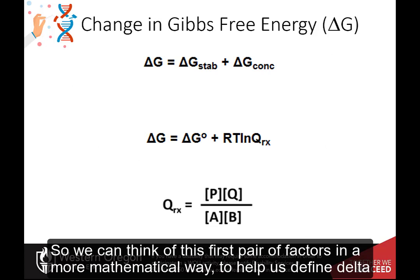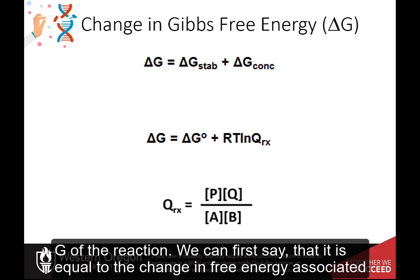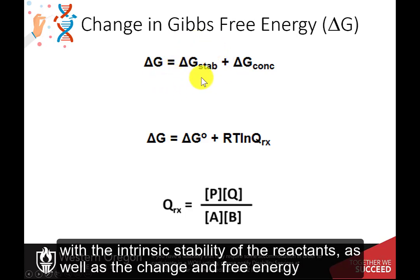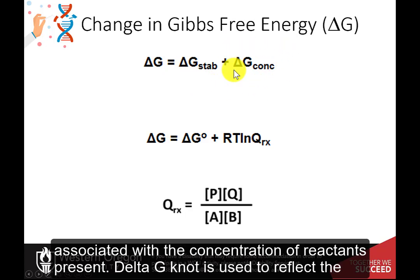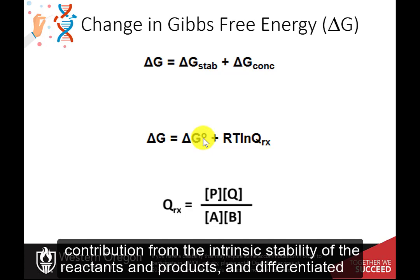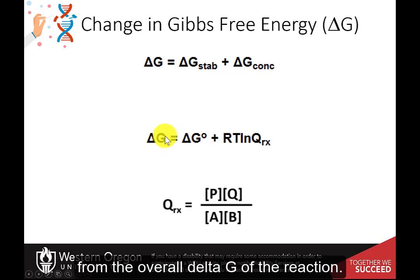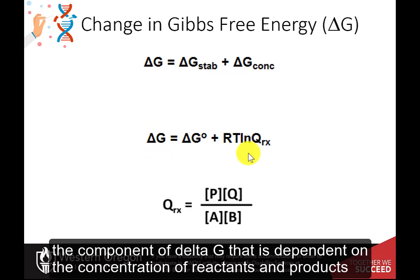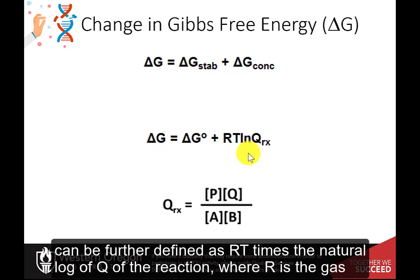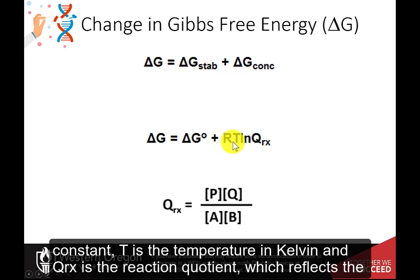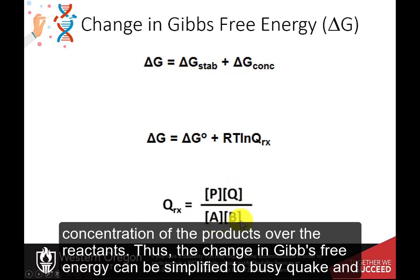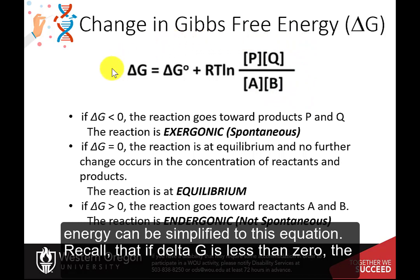We can think of the first pair of factors in a more mathematical way to define delta G of the reaction. We can say it is equal to the change in free energy associated with the intrinsic stability of the reactants — delta G naught — plus the change in free energy associated with the concentration of reactants present. The component of delta G dependent on concentration can be further defined as RT times the natural log of Q of the reaction, where R is the gas constant, T is the temperature in Kelvin, and Q-RX is the reaction quotient, reflecting the concentration of the products over the reactants. Thus, the change in Gibbs free energy can be simplified to this equation.